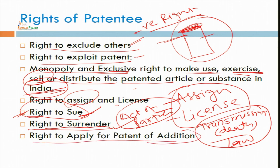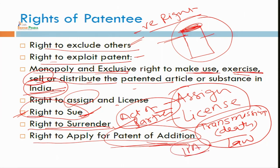Right to apply for a patent of addition — if any patent is granted to you and there are chances of addition, as we have done under section 3D, and there is enhancement in your work — if there is enhancement in efficacy or some type of addition to your patent — you can also apply for a patent of addition. There is a very good provision under the Indian Patent Act. The controller can also help you add your patent of addition to your already existing patent.